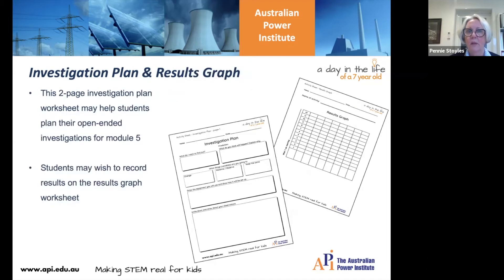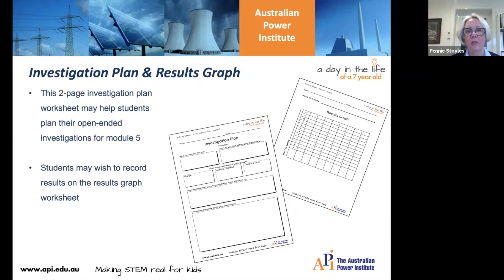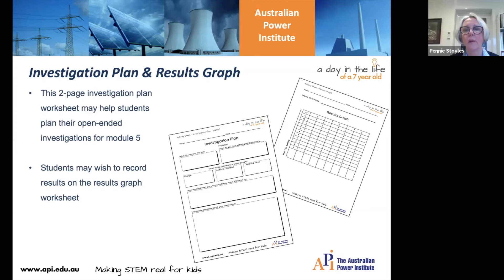The next one relates particularly to module five when students are planning their own investigation. There's a two-page investigation planner sheet and also a blank results graph that students can colour in, getting them to start thinking about graphing their results.